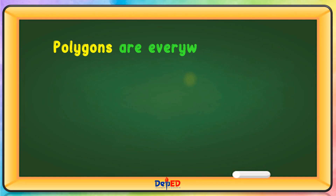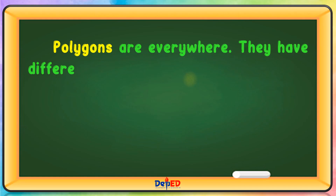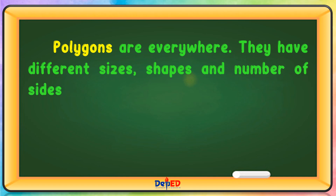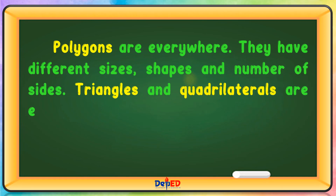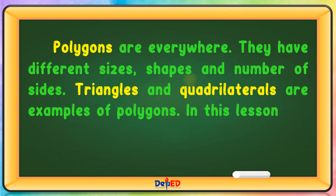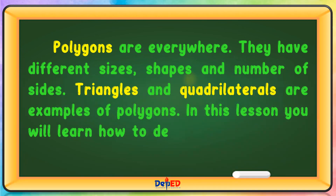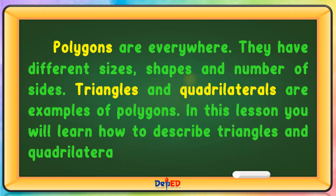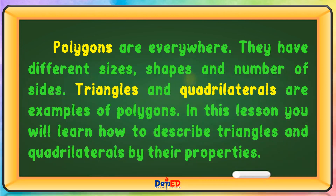Polygons are everywhere. They have different sizes, shapes, and number of sides. Triangles and quadrilaterals are examples of polygons. In this lesson, you will learn how to describe triangles and quadrilaterals by their properties.